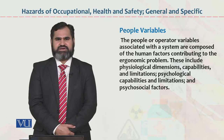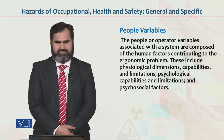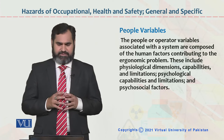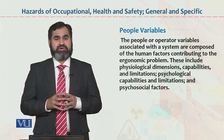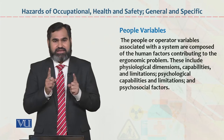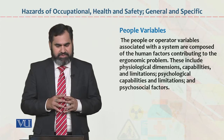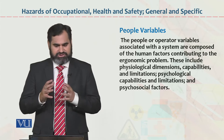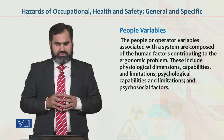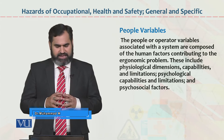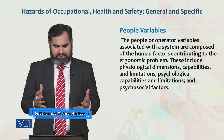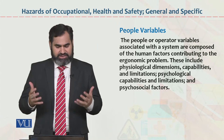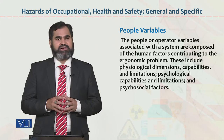Dear students, hazards of occupational health and safety regarding general and specific main sub se important aspect hain, wo human aspects hain. Human aspect mein people variables hain. People variable mean joh imply kaam ker rahi hain us hawaale se baat karenge. The people are operator variables associated with the system, composed of human factors contributing to ergonomic problems. These include physiological dimensions, capabilities and limitations, psychological capabilities and limitations, and psychological factors.